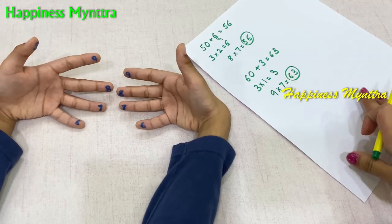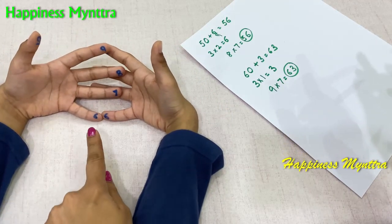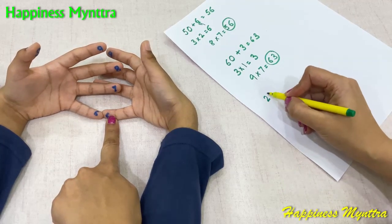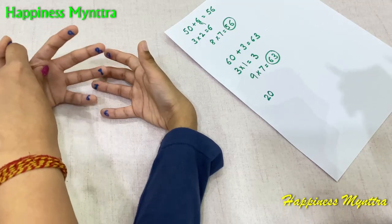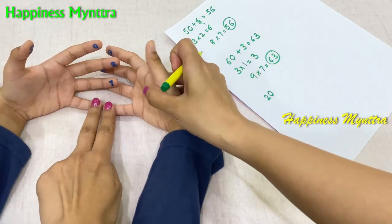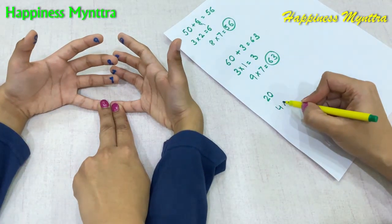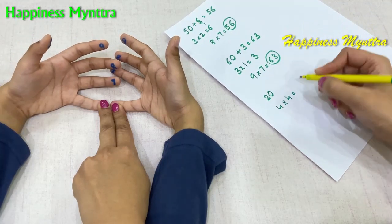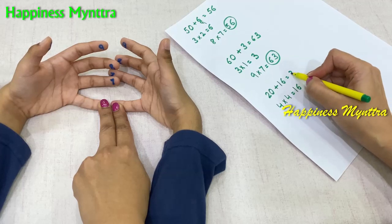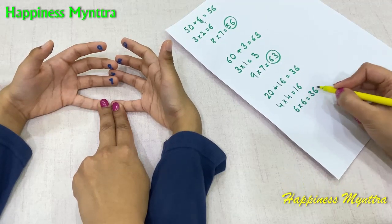Now let's try 6 times 6. In this case, we have 2 fingers below the bridge, so we get 20. We have 4 fingers of this hand left over — 1, 2, 3 and 4 — and the same on the other hand. So we have 4 fingers on both sides, which makes it 4 into 4 equals 16. So, 20 plus 16 is 36. 6 times 6 is 36.